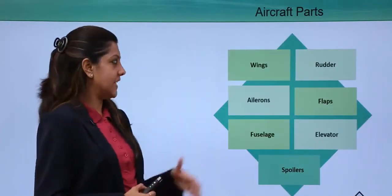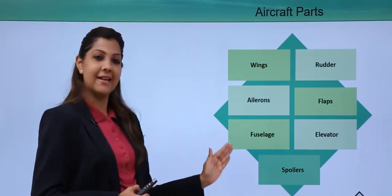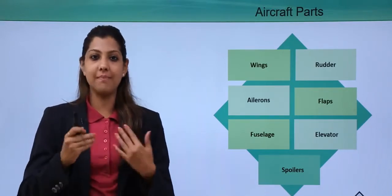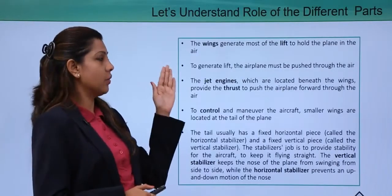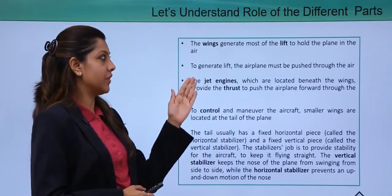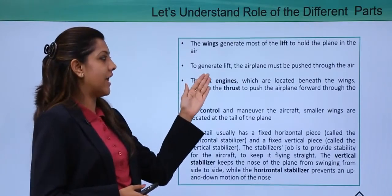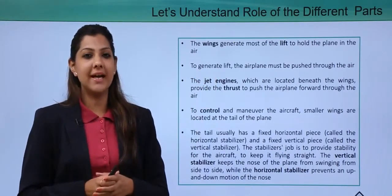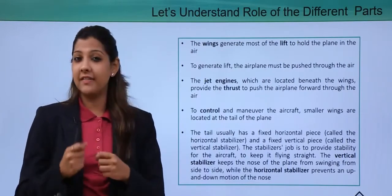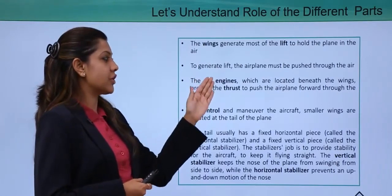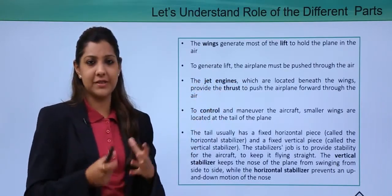We'll cover in detail: wings, rudder, ailerons, flaps, fuselage, elevator, and spoilers — the parts that help the aircraft move forward, backward, and sideways. The wings generate most of the lift to hold the airplane in the air. To generate lift, the airplane must be pushed through the air at speed. The jet engines located beneath the wings provide the thrust to push the airplane forward.